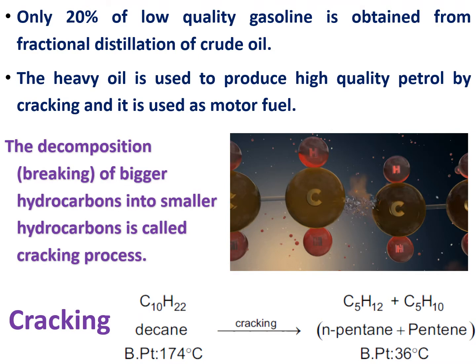Gasoline produced from the refining process is only 20 weight percent of the total amount passed into the refining process. But this 20% is not sufficient to meet the whole requirements. So we need an alternative process. In the same refining process, we are also producing heavy oil, but it is not directly useful. This not-useful heavy oil can be converted into high quality petrol or diesel by the cracking process.